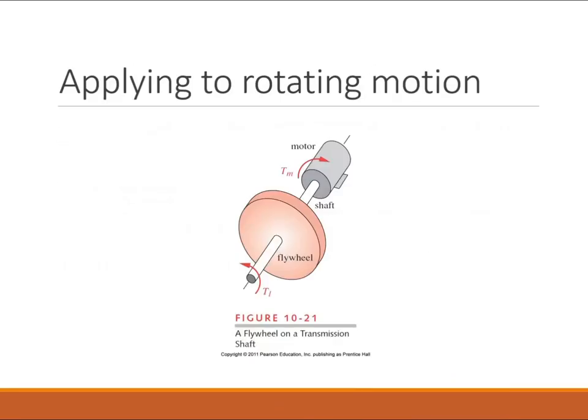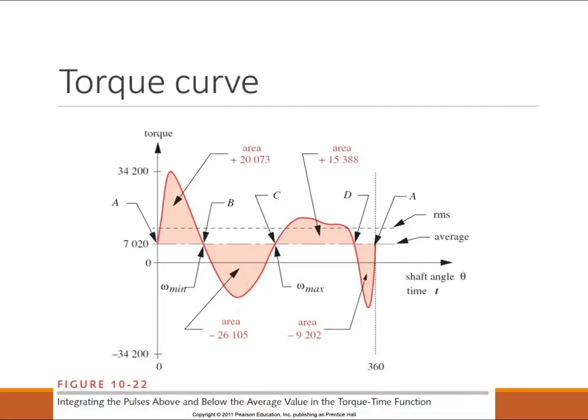So let's apply this now to rotational motion. Now I have torques instead of forces and I have I instead of M and I have alpha or angular acceleration instead of A. So my work used to be force times distance and now it has become torque times the angle that it moves around. So everything works the same.